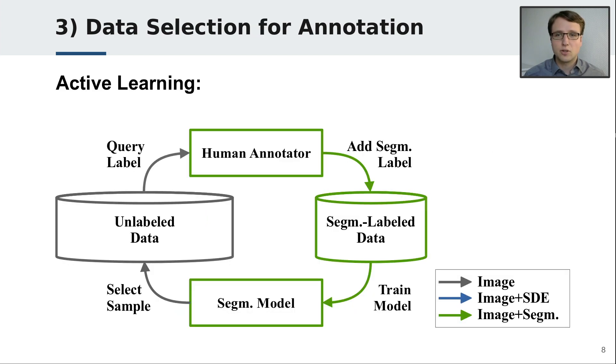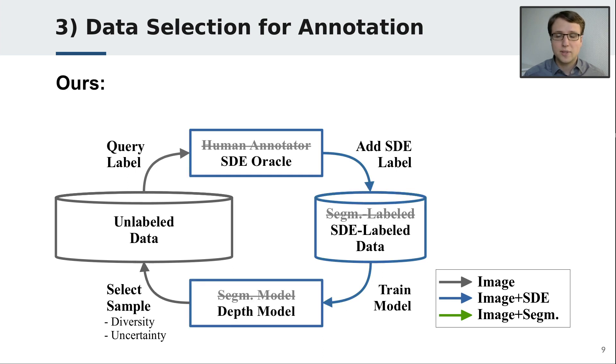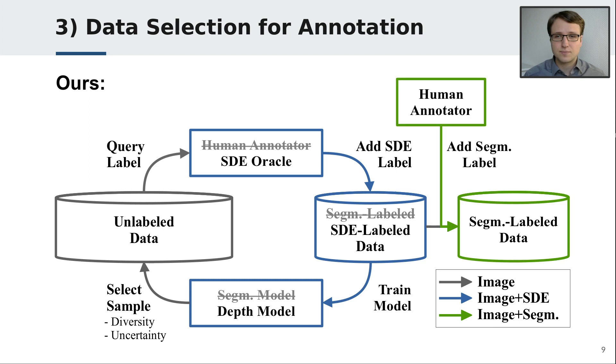Third, we propose an automatic data selection for annotation, which selects the most beneficial samples for annotation. Similar to active learning, the selection is done iteratively, based on a model trained on the currently selected data. However, we replace the human annotator in the cycle with the self-supervised depth estimation oracle and only request the semantic segmentation annotations in the end. This lifts the requirement of a human in the loop, which increases flexibility, scalability and efficiency.